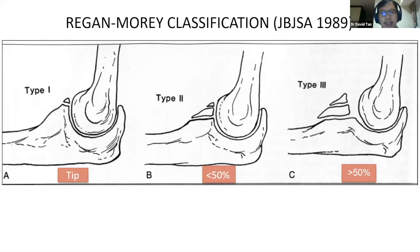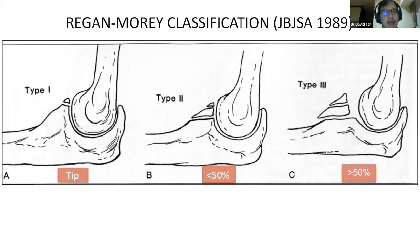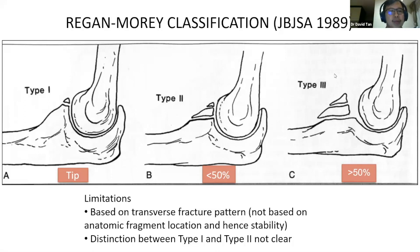The Regan-Morrey classification was proposed back in 1989. Type 1 fractures were thought to be avulsion fractures, and it was surmised they did not require treatment. Type 2 fractures involved less than 50% of the coronoid height, and type 3 fractures involve more than 50%. Some limitations with the system include the assumption that all fracture lines are transverse, and it may underappreciate the anatomic contribution to stability of a coronoid fracture.